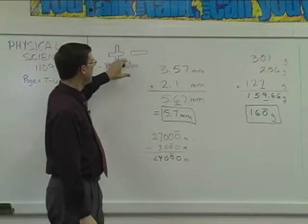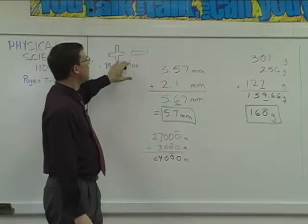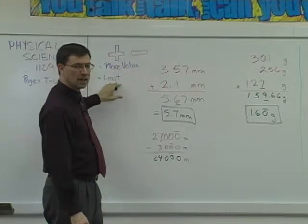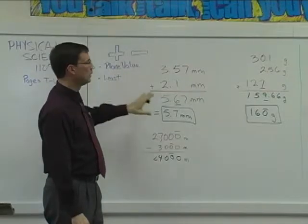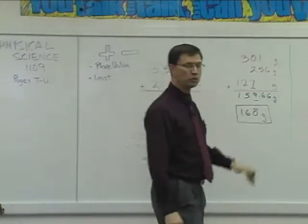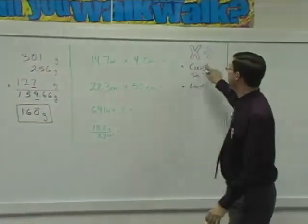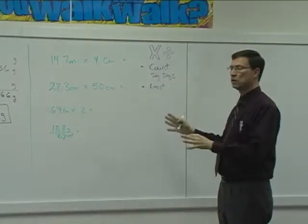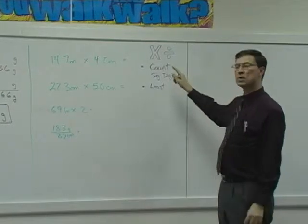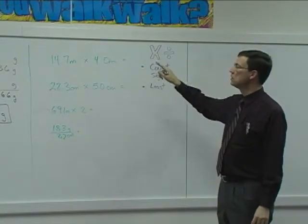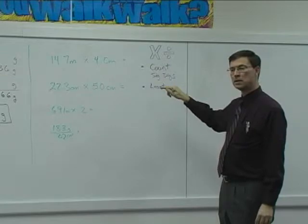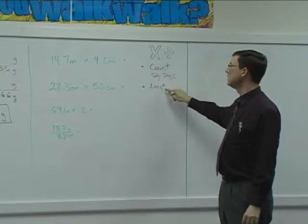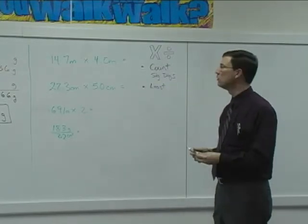Alright, so let's review that again. For place value, when I'm adding and subtracting, you look at the least accurate measurement, and that limits your answer. Now let's jump over here to multiplying and dividing. Here, we do the multiplication or division, just use your calculator, divide it out, multiply it out. But then you count how many significant digits are in each of the measurements, and you take the least number of significant figures.